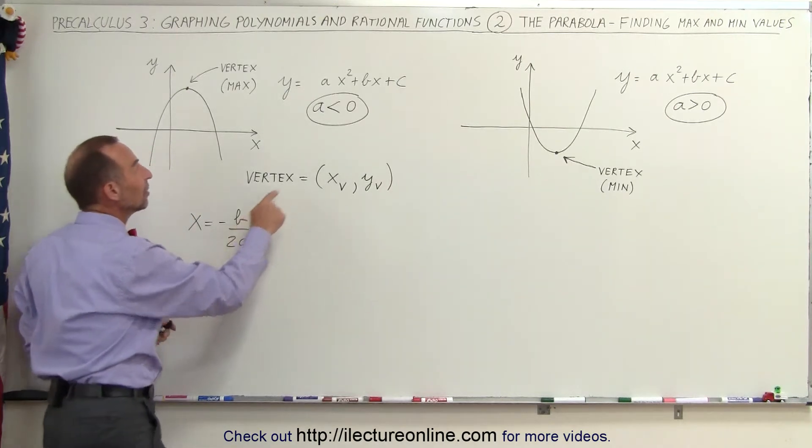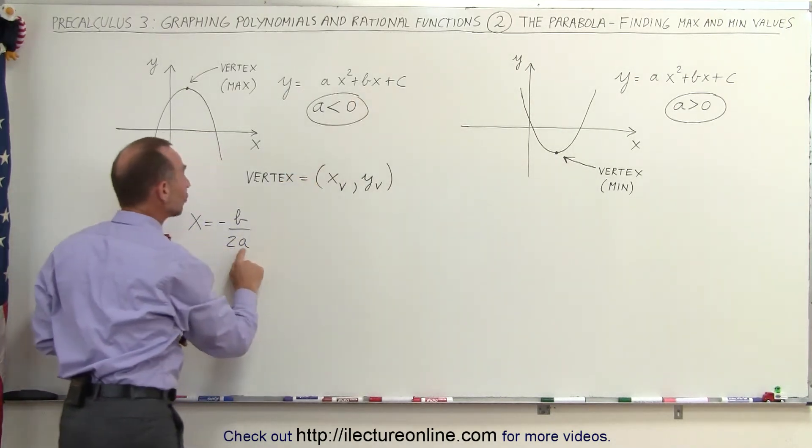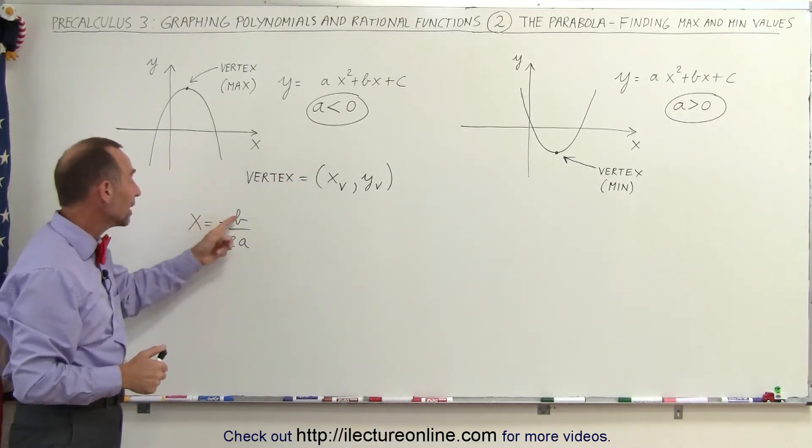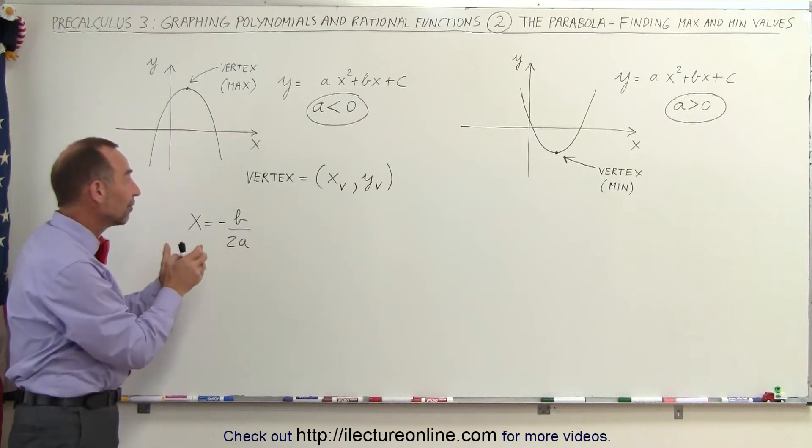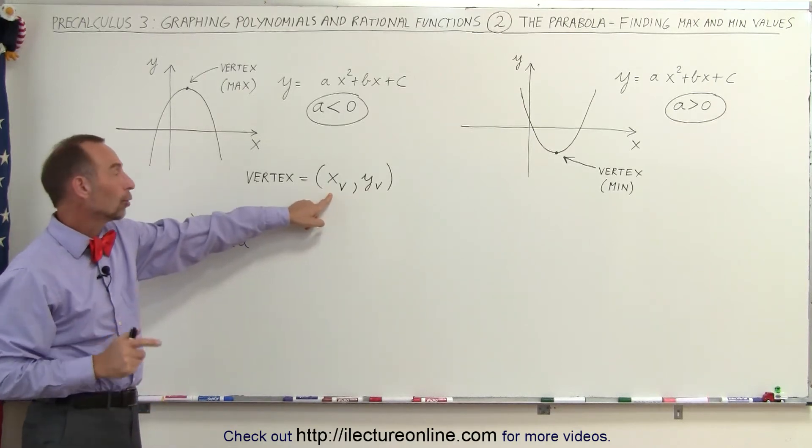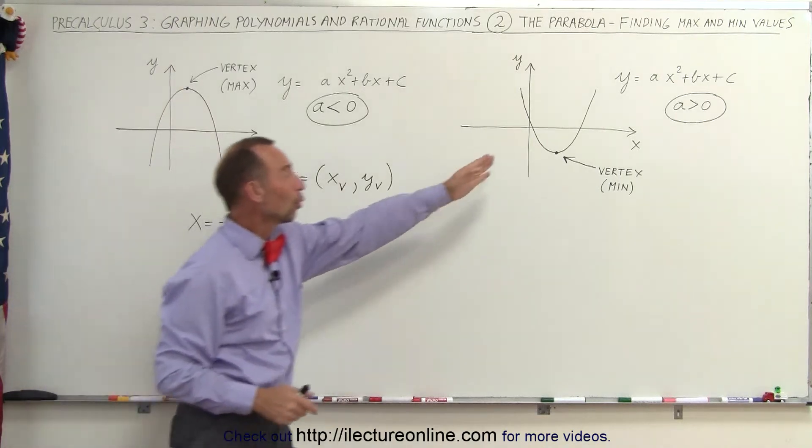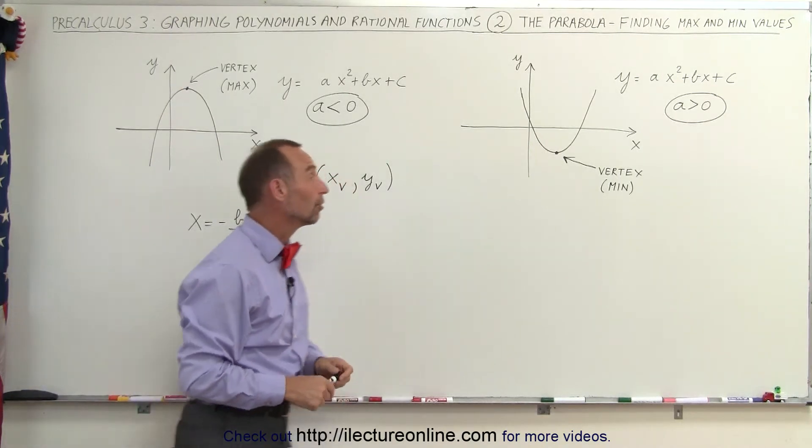And b is the coefficient of the first term right there. So to find x we simply take minus b divided by 2a, and that will give us the value for the x-coordinate of the vertex. That works for either a parabola that opens downward or a parabola that opens upward.